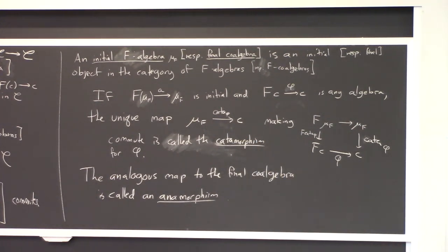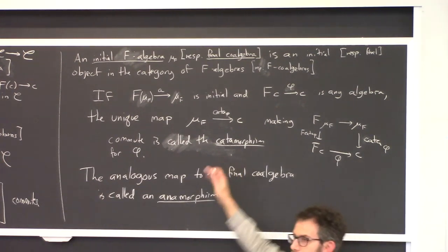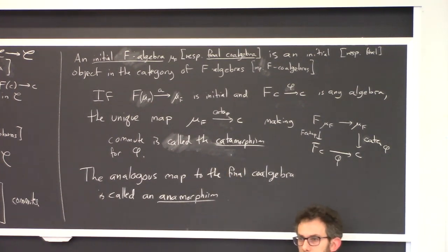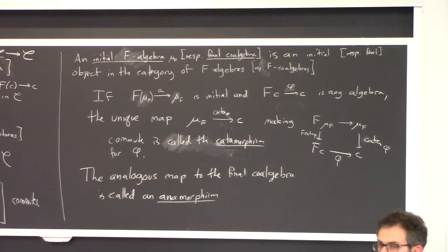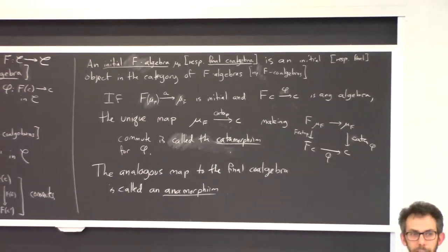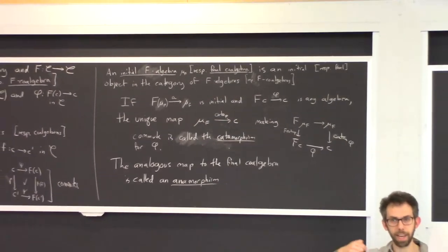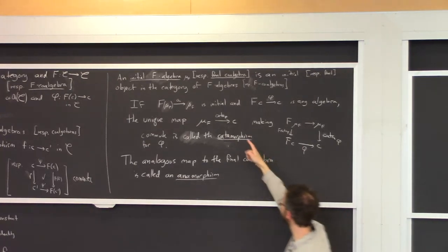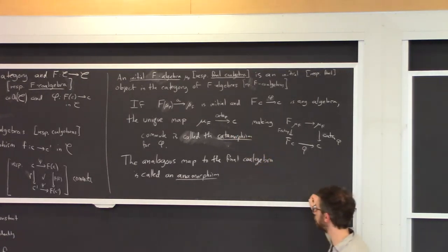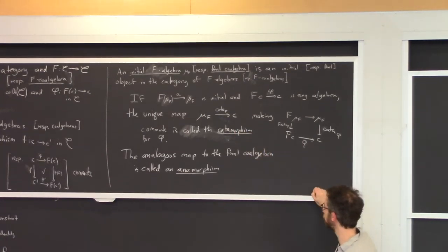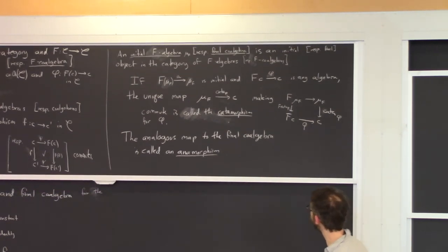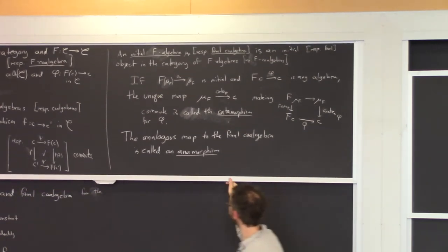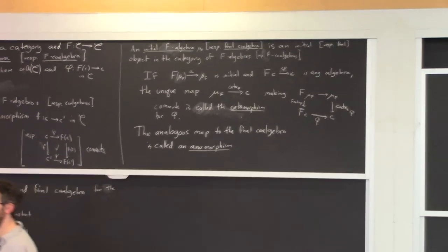If the initial algebra is lists, it's going to tell you how to fold up a list. And if the initial algebra is trees, it's going to tell you how to take any tree and turn it into an element of type C. That's what an initial algebra is. Any questions just on the definition from yesterday?